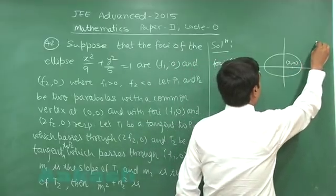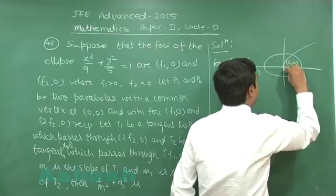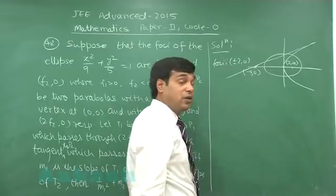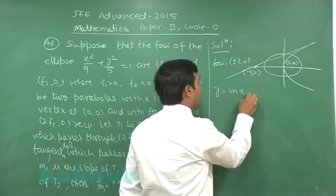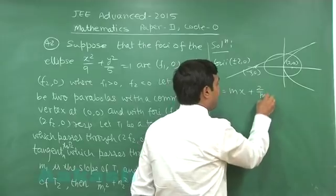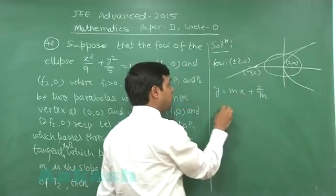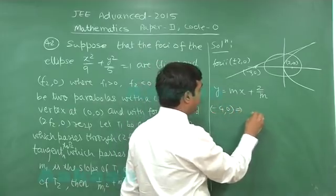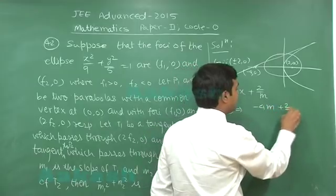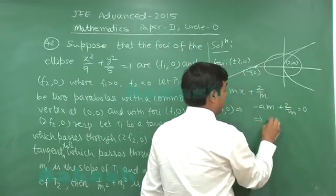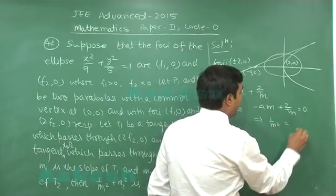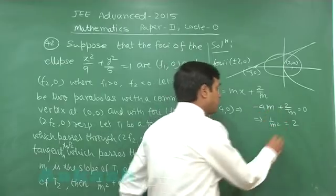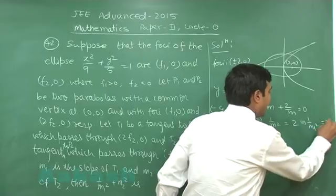For the first parabola, the tangent passes through the point. We can write y = mx + 2/m because a = 2. Passing it through (-4,0), we get -4m + 2/m = 0, which gives 1/m² = 2. Since the slope is m₁, we have 1/m₁² = 2.